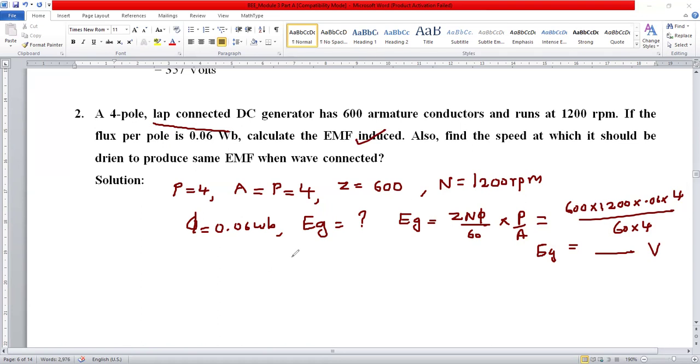Now moving on to the second part. Find the speed at which it should be driven to produce the same EMF. We will use the same EG value that we obtained from part 1.